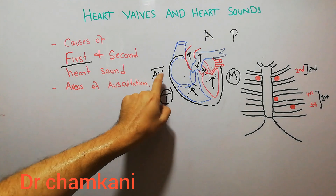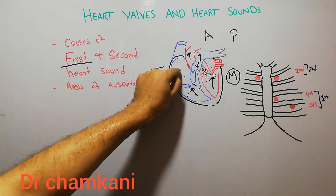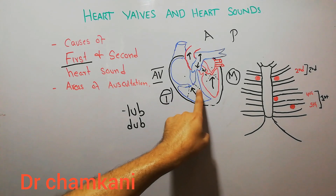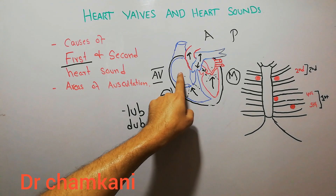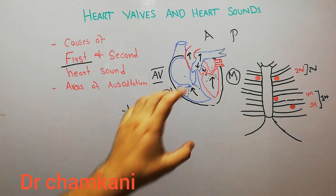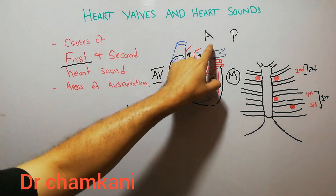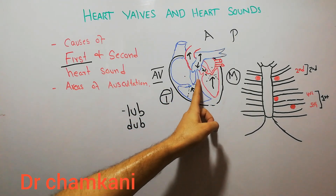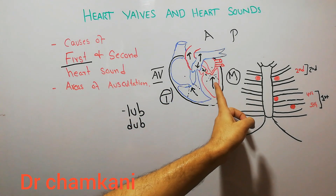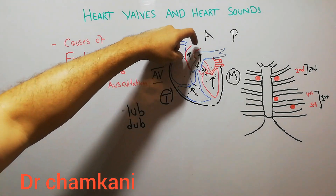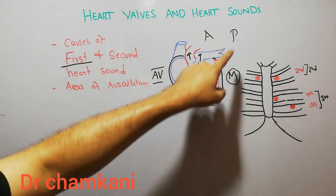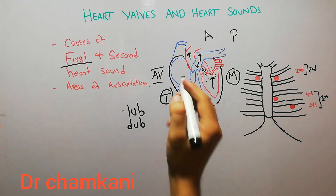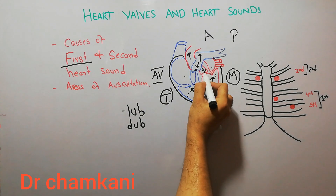Just as the atrioventricular valves allow blood to move from the atria into the ventricles and close during ventricular pumping, similarly the aortic valve and the pulmonary valve allow blood to move from the ventricles into the pulmonary artery and aorta, but will not allow blood from the aorta back into the left ventricle or from the pulmonary artery back into the right ventricle. As soon as blood starts moving back, these valves will close.